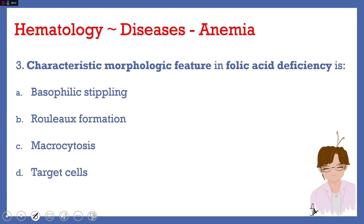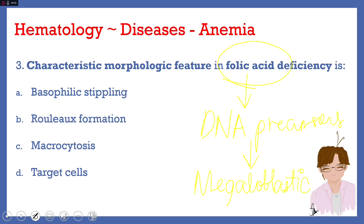Number three: characteristic morphologic feature in folic acid deficiency. Folic acid, as we mentioned, is one of the DNA precursors. If DNA precursors are missing or deficient, that gives rise to megaloblastic anemia. Megaloblastic anemia is a type of macrocytic anemia. So the characteristic morphologic feature here is letter C, macrocytosis — the cells are large, the cells are macrocytic.